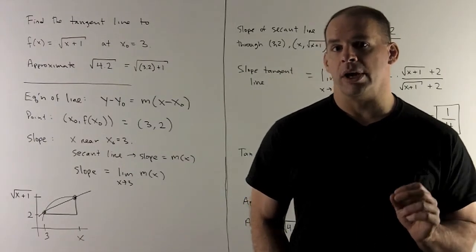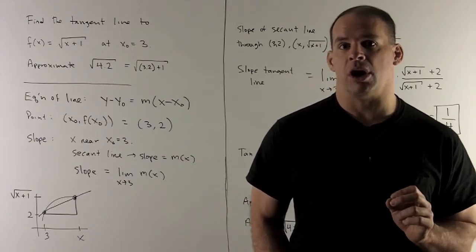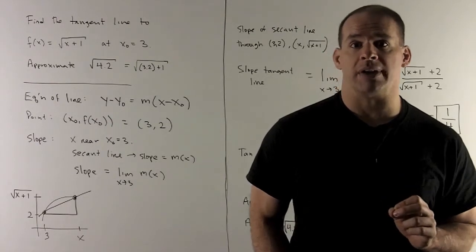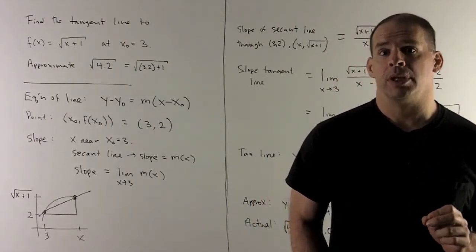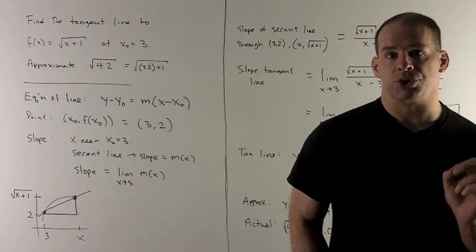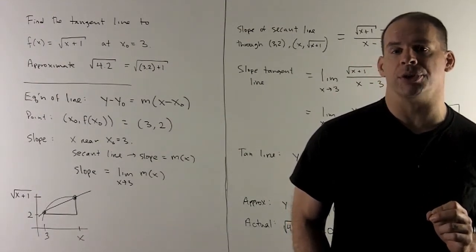The problem is, find the equation of the tangent line to the graph of the function f(x) = √(x+1) at the point x₀ = 3. Once you have that line, use it to approximate √4.2.